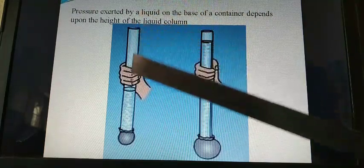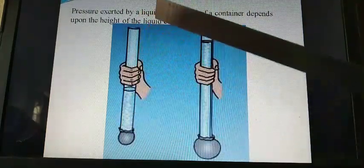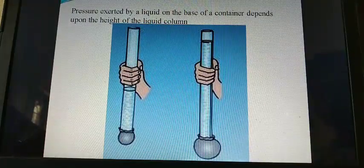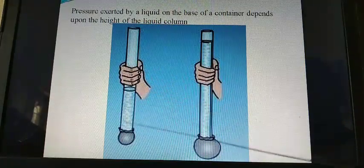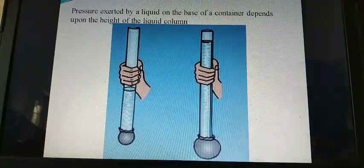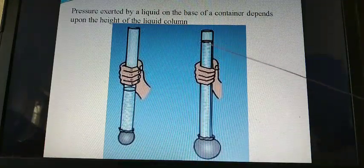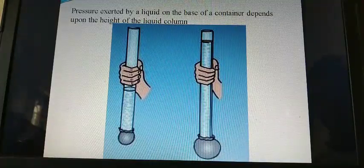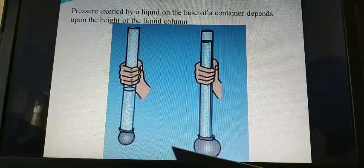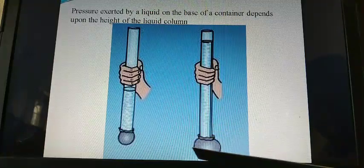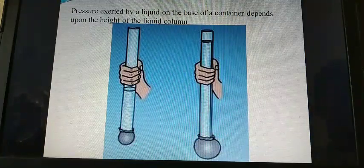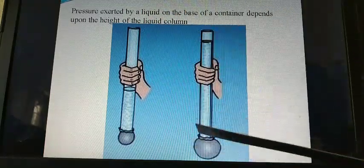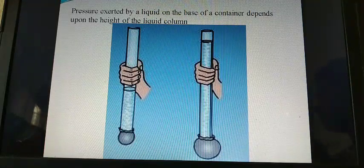Pressure exerted by a liquid on the base of the container depends upon the height of the liquid column. Take a glass tube that is open at both ends. Fix a rubber balloon at the lower end of the tube. Put some water into the tube and observe the balloon. Now, pour some more water into the balloon and again observe the balloon. The balloon starts bulging outwards. The bulge increases with an increase in the height of the water column.